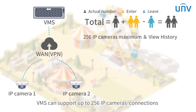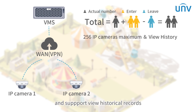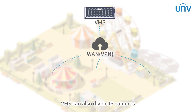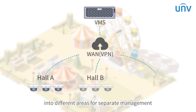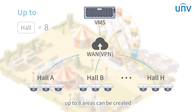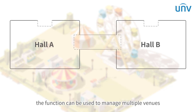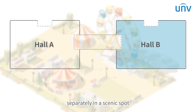VMS can support up to 256 IP camera connections and supports viewing historical records. VMS can also divide IP cameras into different areas for separate management. Up to eight areas can be created, with a maximum of 32 IP cameras per area. For example, this function can be used to manage multiple venues separately in a scenic spot.